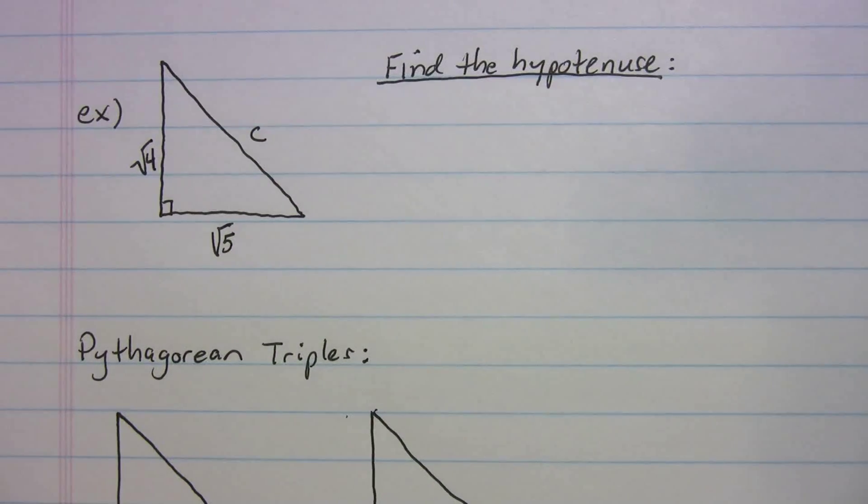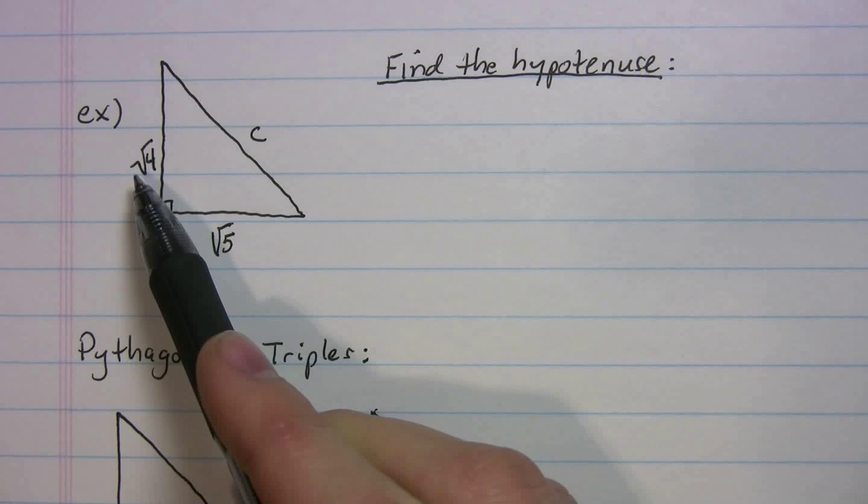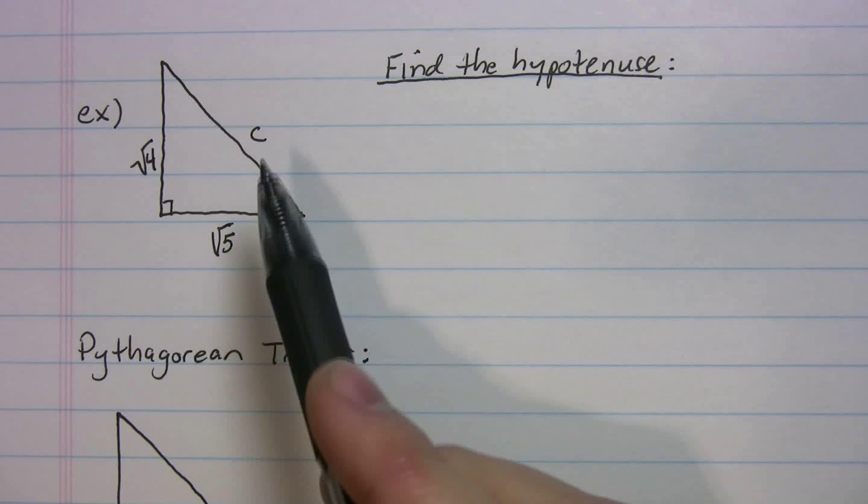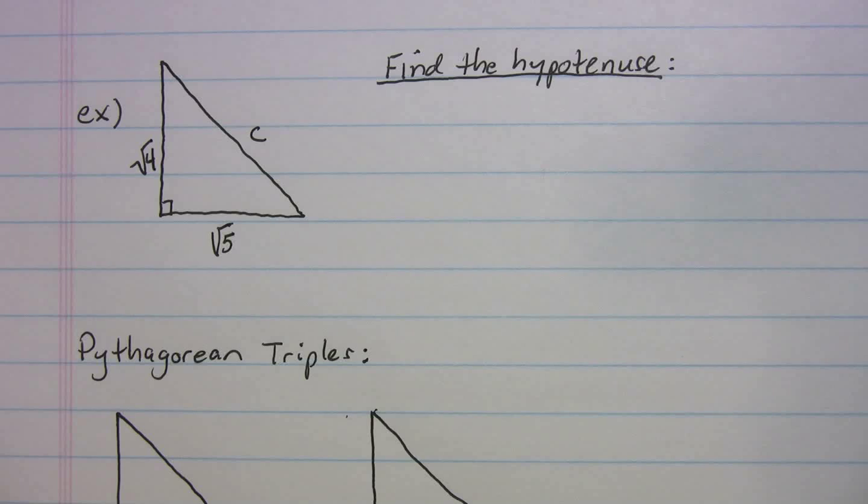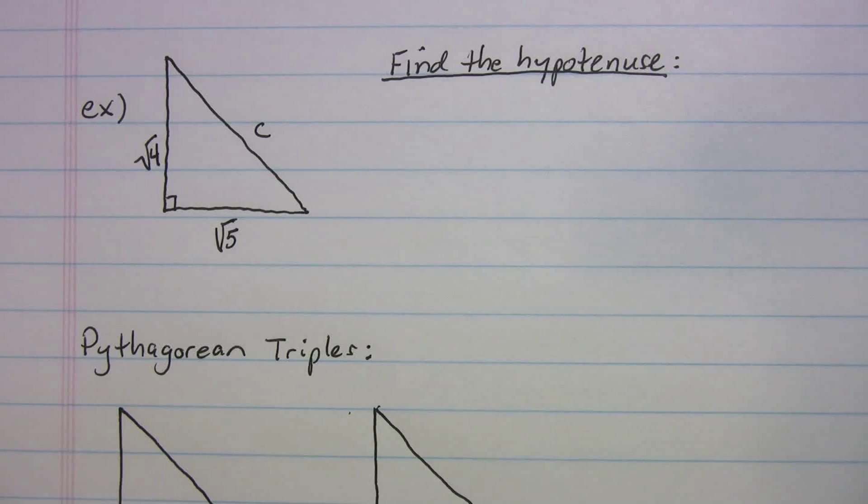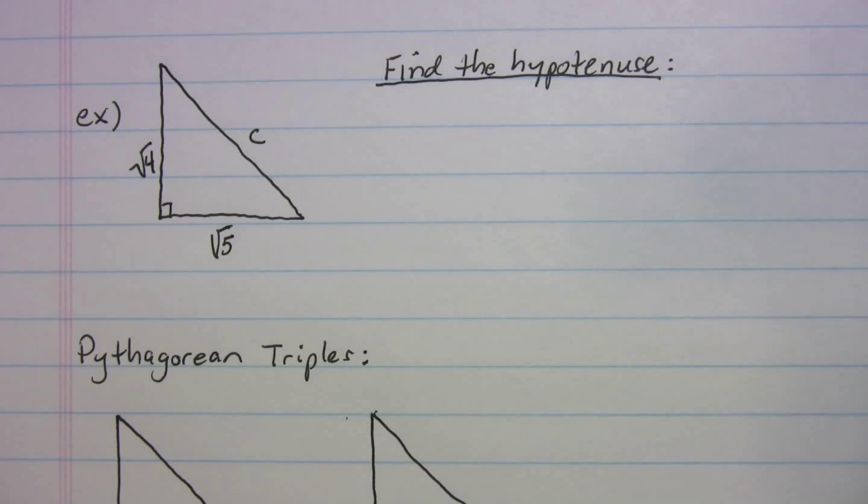Okay, so let's say I gave you this triangle right here, and it's got to be a right triangle, and I told you that we have legs of radical four and radical five and hypotenuse c. Would you be able to find the hypotenuse? And you can pause the video if you want right now to give it a try. I'm going to go into the explanation.